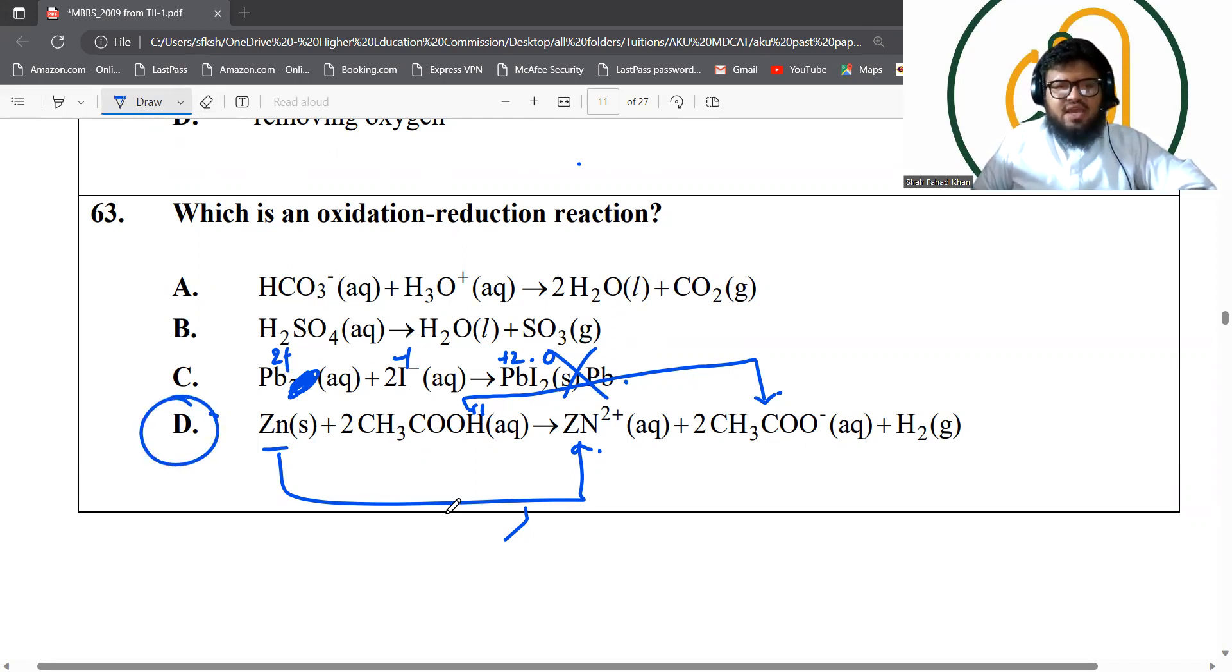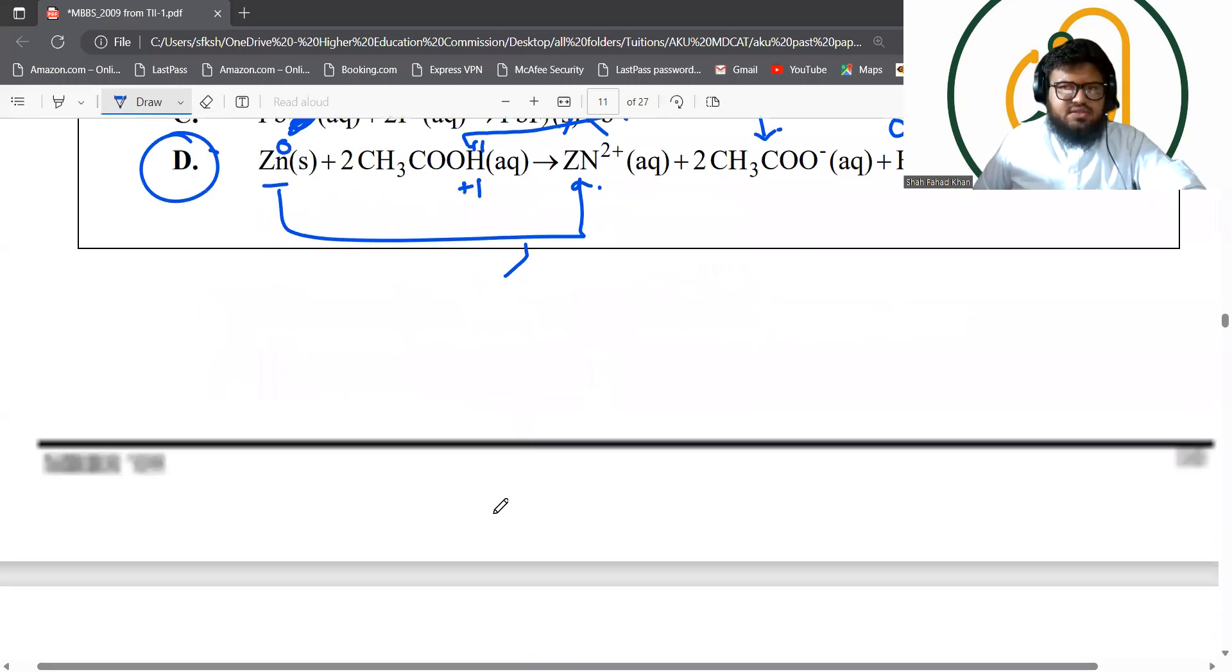So option D is the best because if you look at the zinc here, zinc is going from zero to plus two. What about the hydrogen? Hydrogen is going from plus one to zero. So it's getting reduced. And this one is getting oxidized. So option D is the best answer over here.